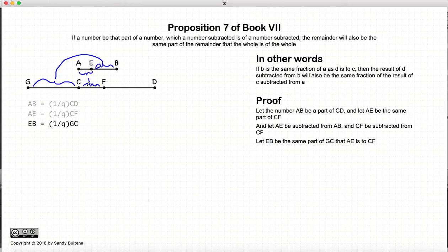So again, ae is some fraction of cf, and it is the same fraction that eb is to gc.